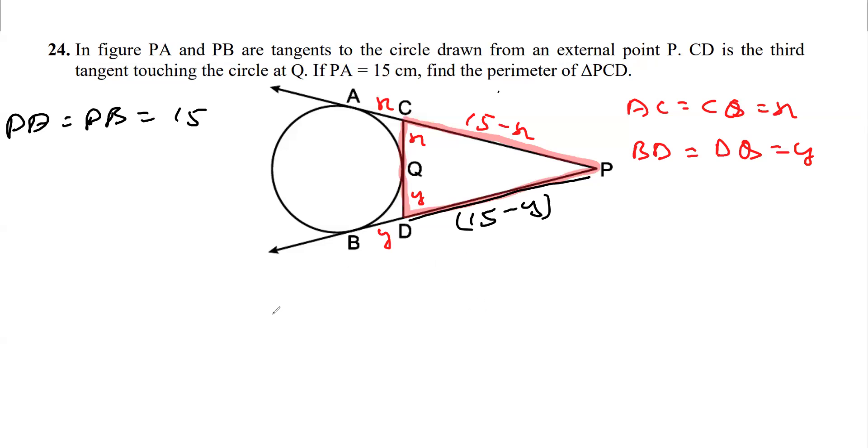Now we have to get the perimeter of this figure. Perimeter is the sum of the three sides. That is, perimeter is PC plus CD plus PD.